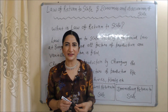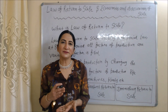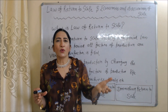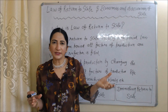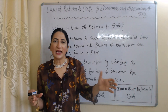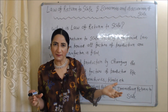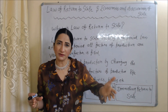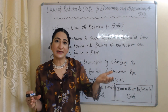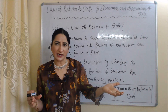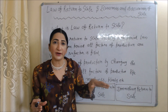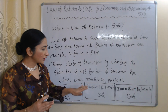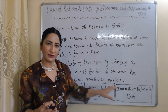Hello everyone, my name is Minni Sati. Today we are going to talk about the Law of Returns to Scale, and Economies and Diseconomies of Scale. The Law of Returns to Scale is a long-run concept. In the long run, all factors are variable — no factor is fixed — meaning we can change the scale of production by changing all factors of production. When we change production by changing all factors, three possibilities can arise: increasing returns to scale, constant returns to scale, and diminishing returns to scale.